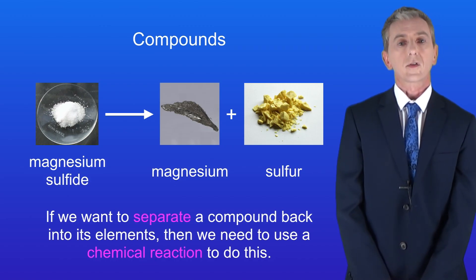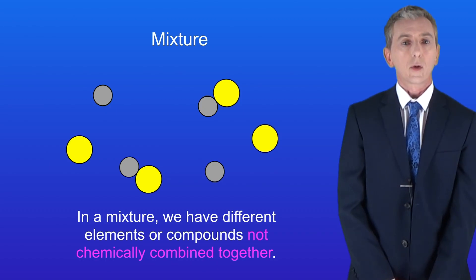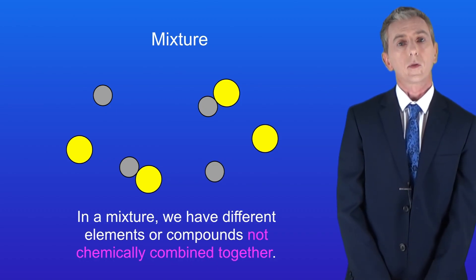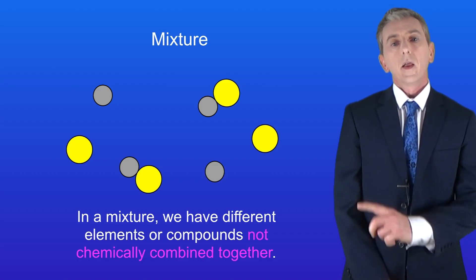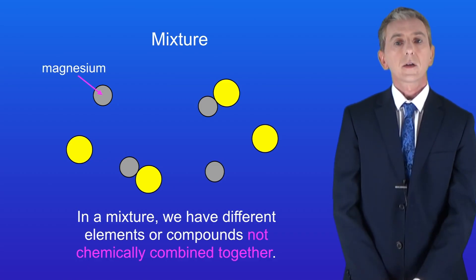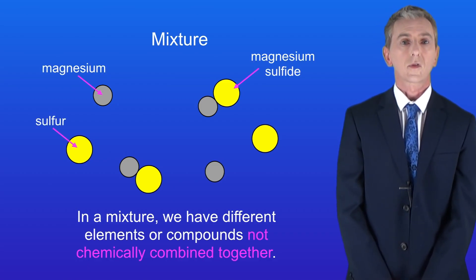Let's take a look now at mixtures. In a mixture we've got different elements or compounds but they're not chemically combined. This shows a mixture of magnesium atoms, sulfur atoms and magnesium sulfide.